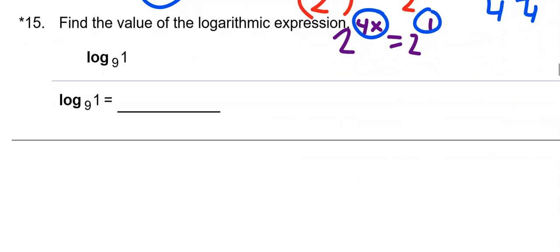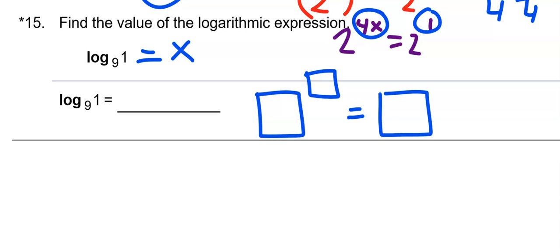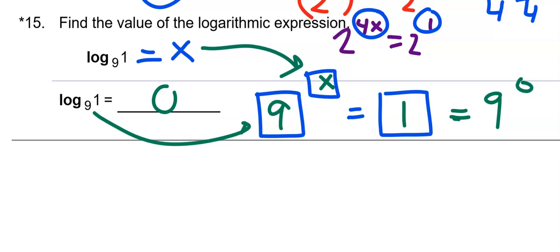I'm going to do a couple more and be done with this set of notes. Log base 9 of 1. Set it equal to x. Something to the something power equals something. 9 is the base. X is the exponent. The only thing that's left is this. What is the only exponent you can put in the box that you can raise 9 to and end up with a 1? The only thing you could do is have 9 to the 0. The answer to this question is 0.